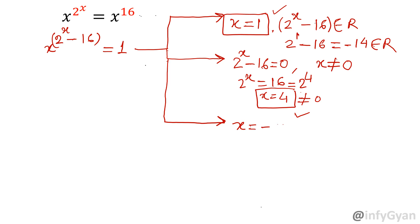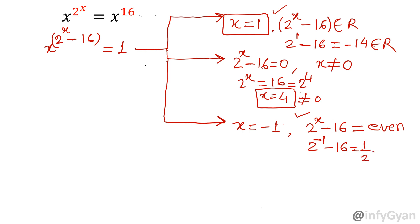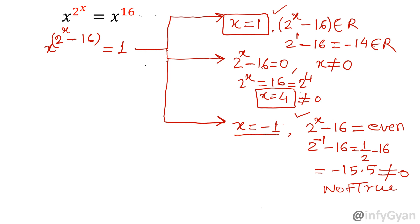Now case 3: x is equal to minus 1. The third case is base is minus 1 and power is even. So it may be possible x is equal to minus 1. Check whether the power is coming out even or not. So 2 raised to the power x minus 16 — put x equal to minus 1. That value will be 2 raised to the power minus 1 minus 16, which gives 1 over 2 minus 16, so it will be minus 15.5, and which is not even — it is a decimal, not even. So not true. That means we cannot accept this solution.